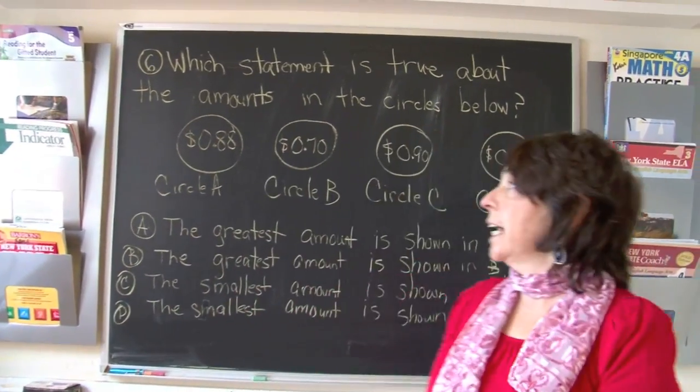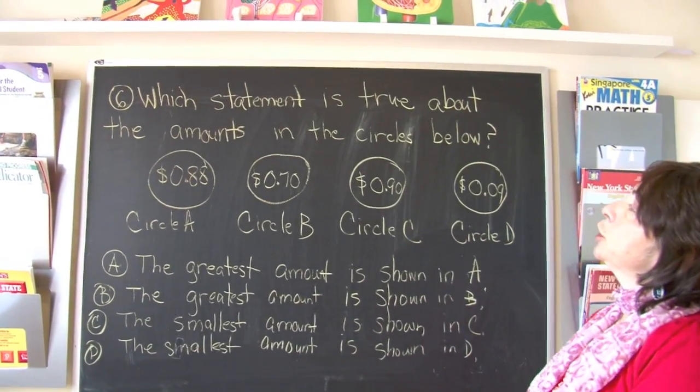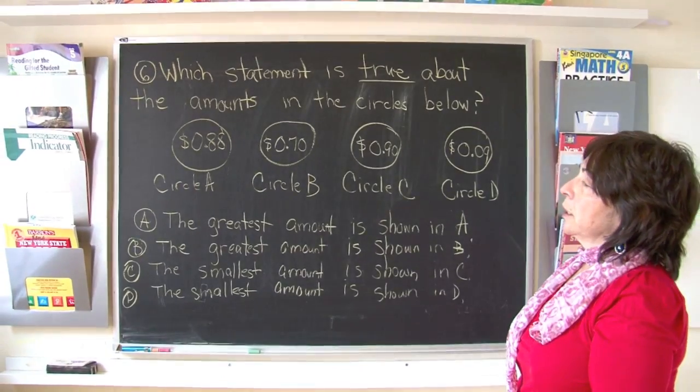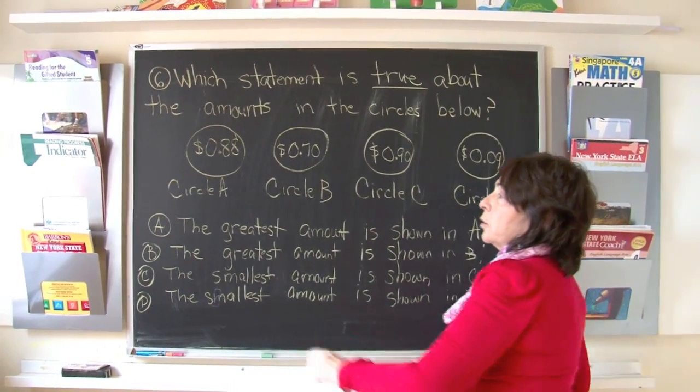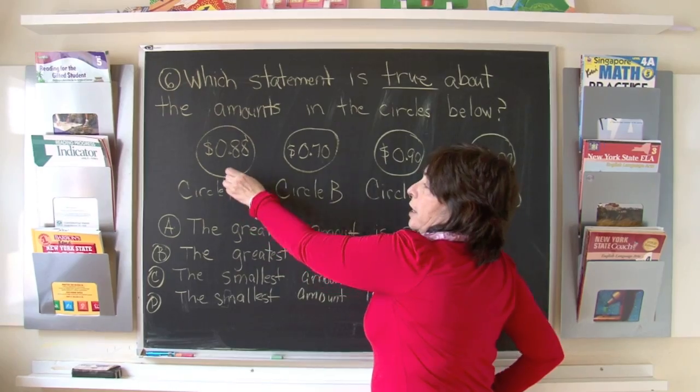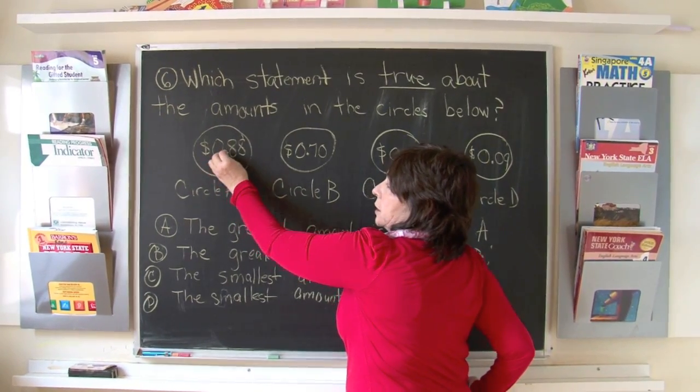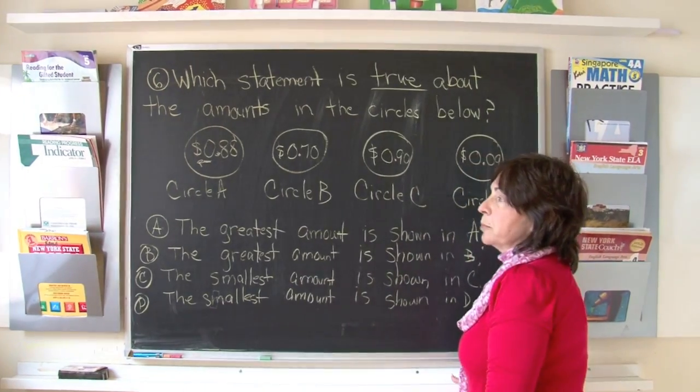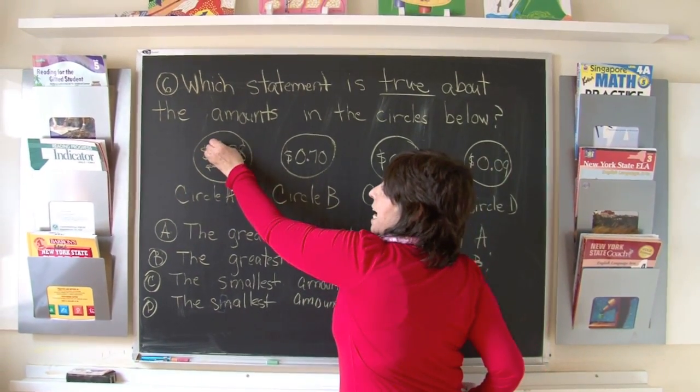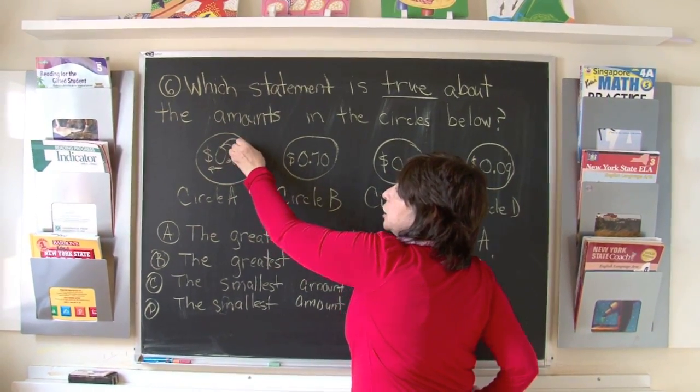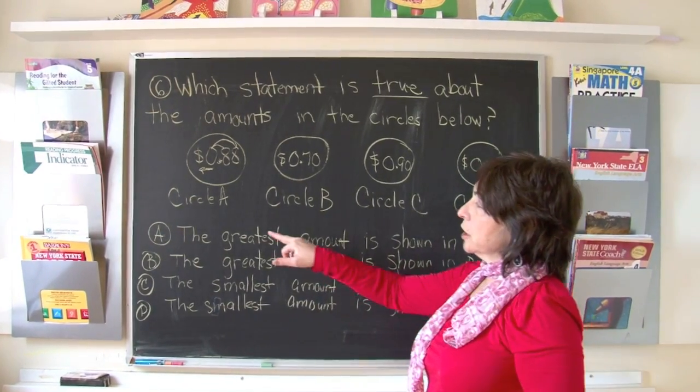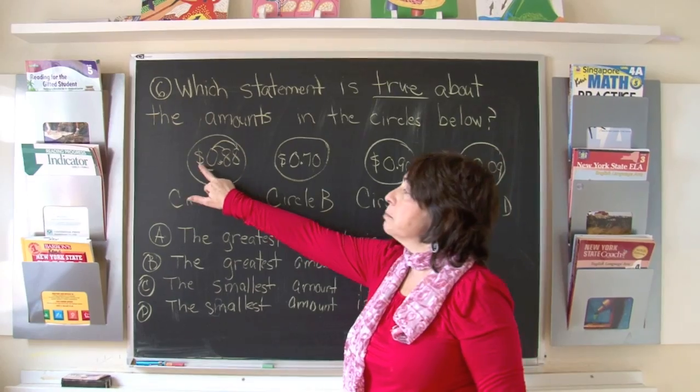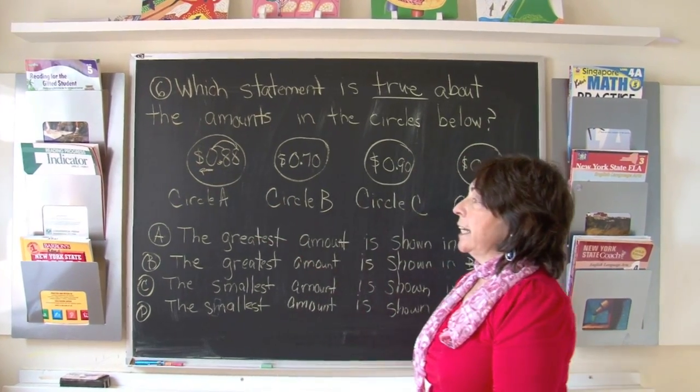The question says, which statement is true about the amount in the circles below? Well, let's look. Circle A. There are no whole numbers. The number to the left of the decimal is the whole number. There are no whole numbers. Next is tenths and then hundredths. This circle A has eight tenths and eight hundredths, and it's money, so it's eighty-eight cents.